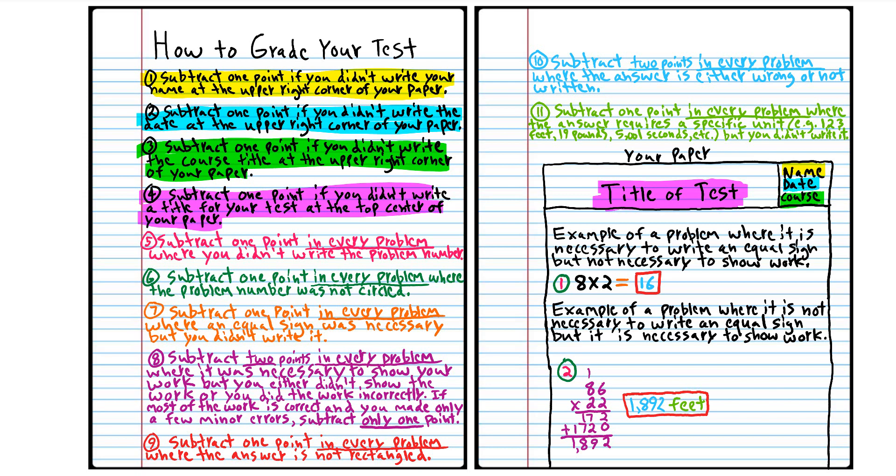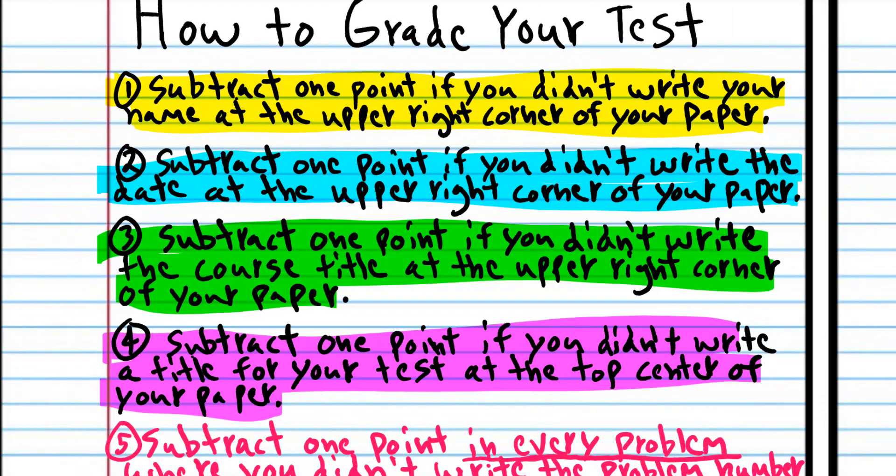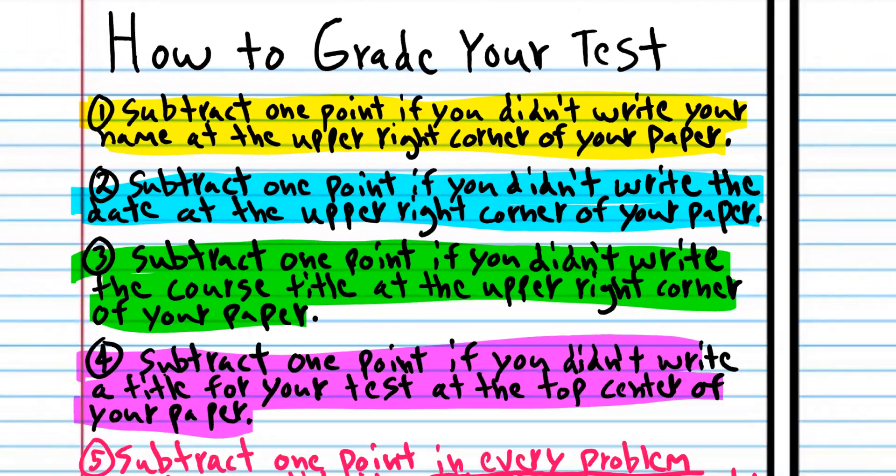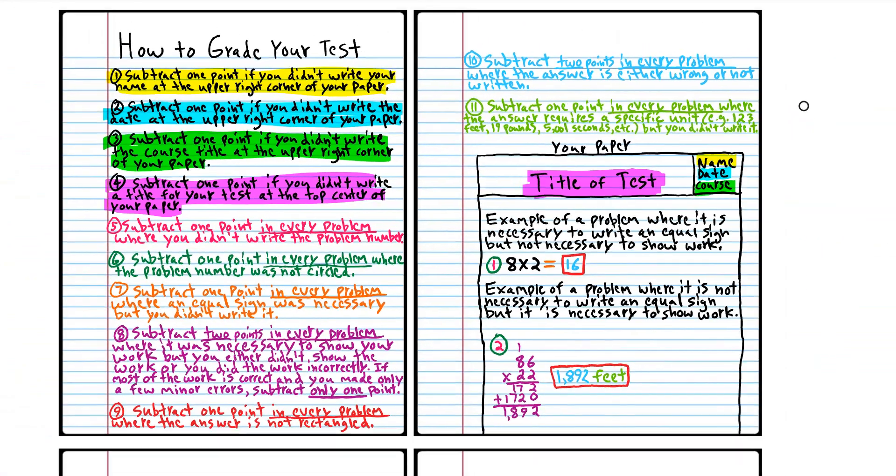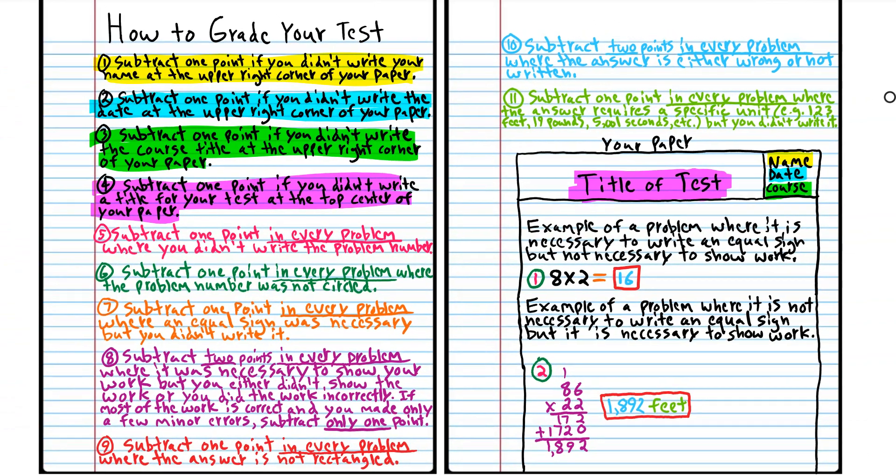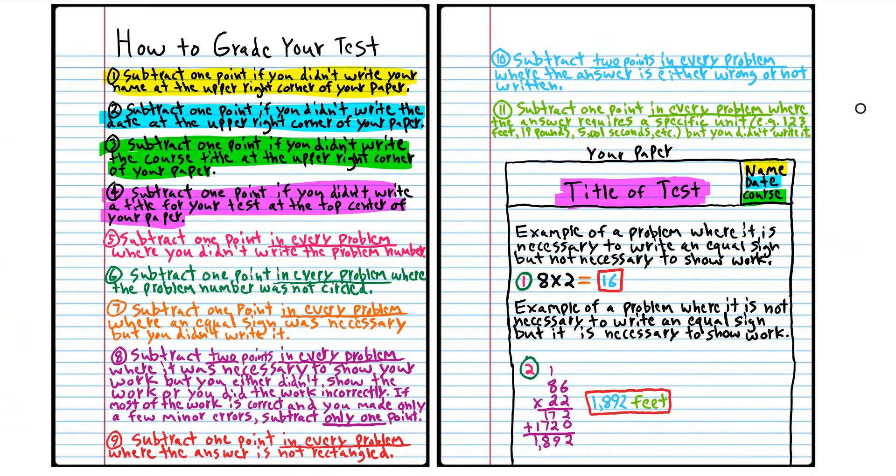You can see in the yellow it says subtract one point if you didn't write your name at the upper right corner of your paper. And then it says in the blue subtract one point if you didn't write the date at the upper right corner of your paper. And so on. So name, date, course title, the title of the paper, which is pre-algebra test number one.